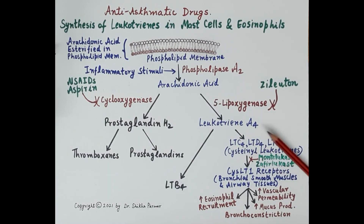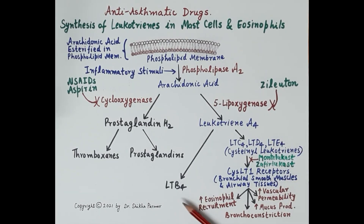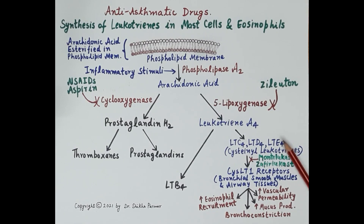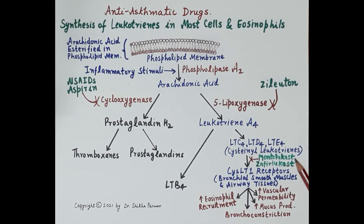Then the 5-lipoxygenase enzyme converts arachidonic acid into leukotriene A4, which is an unstable epoxide. In cells like neutrophils, leukotriene A4 is converted to leukotriene B4, while in mast cells and eosinophils, leukotriene A4 is converted into leukotriene C4, leukotriene D4, and leukotriene E4 — that is, cysteinyl leukotrienes.